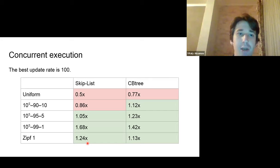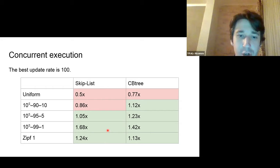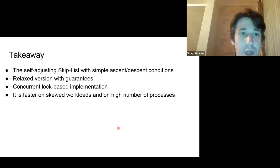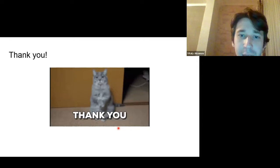In concurrent execution, we compare Splaylist with corresponding data structures across uniform workloads and one zip-one workload. Red squares indicate we lose to the corresponding data structure; green squares show we are better. The more skewed the workload, the better we perform, as predicted. The takeaway: we present a new self-adjusting data structure using simple ascent and descent conditions. We show a relaxed version with guarantees, a concurrent lock-based implementation that is faster on skewed workloads and high processor counts.